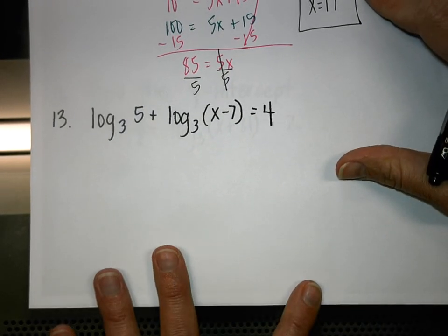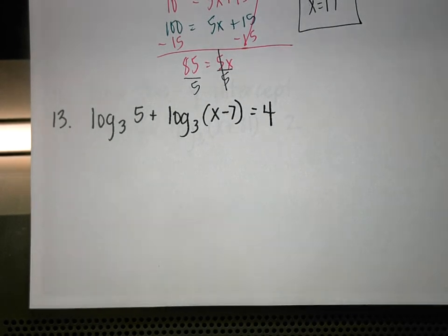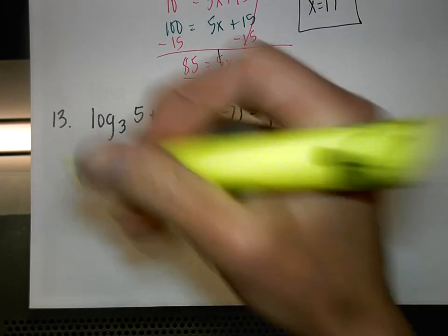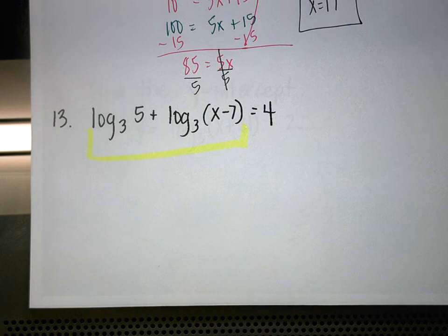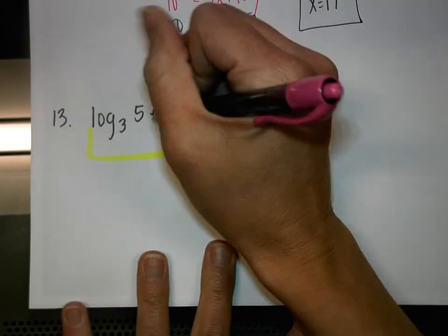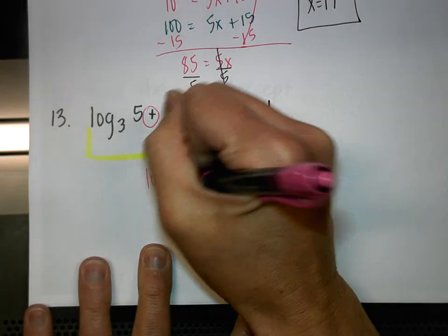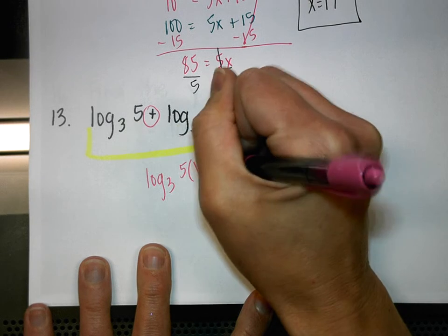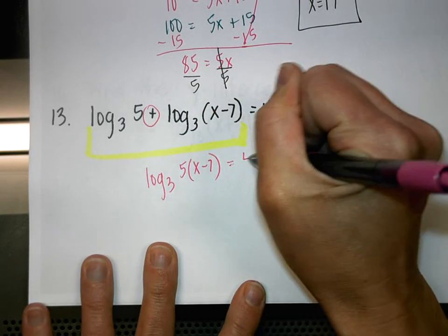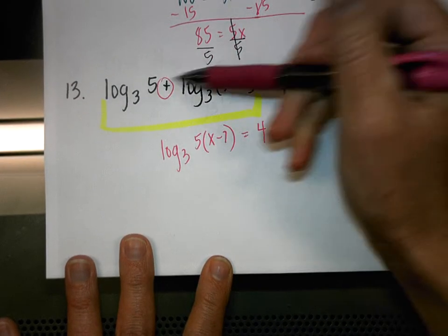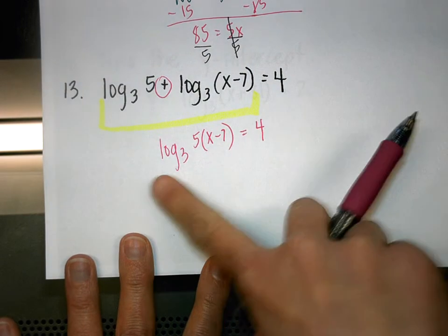Number 13: To eliminate logs, they must be a single log. We need to make these into a single log by condensing using the product property, which takes addition and changes it into a product. We get log base 3 of 5(x − 7) equals 4.